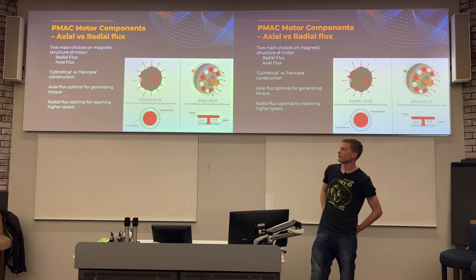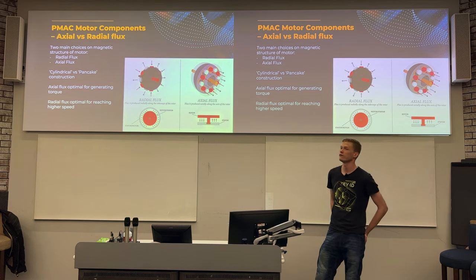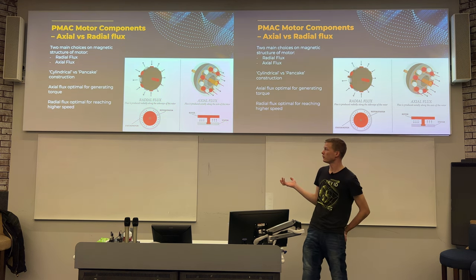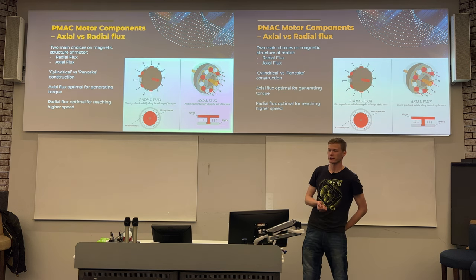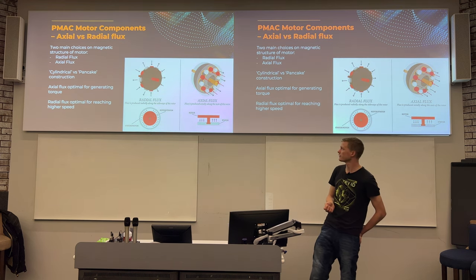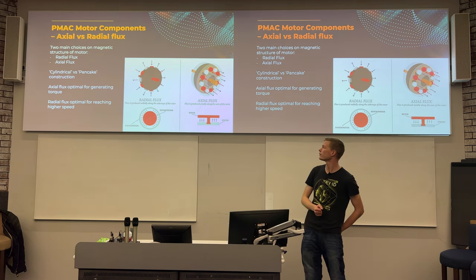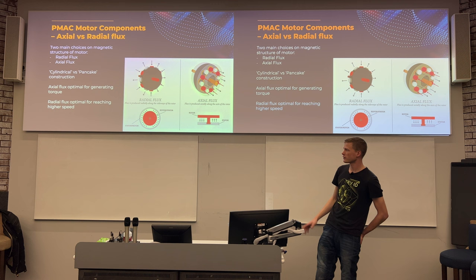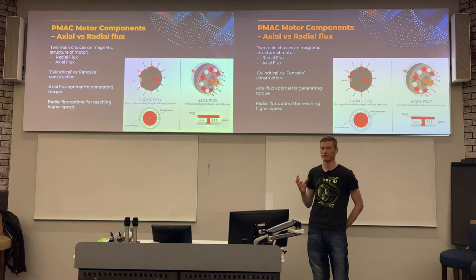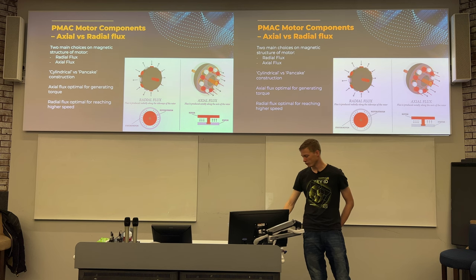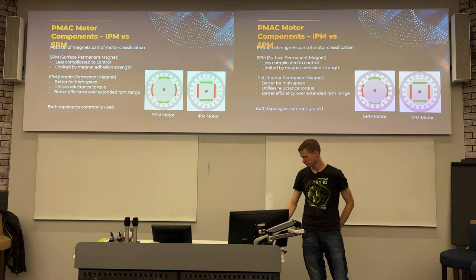One of the other differences or main characteristics of electric motors is the flux direction — this is really just to indicate the direction in which the magnetic field acts. With radial flux, the flux acts radially, which is perpendicular to your axis of rotation. Axial flux is in the same direction as the axis of your rotation, so the magnets sit flat on the surface of the rotors as opposed to on the outside. As I covered last week, axial flux tends to be better for high torque, while radial flux is better if you want to get to high speeds. Both are very commonly used in all sorts of configurations.